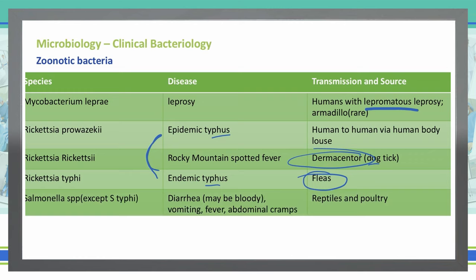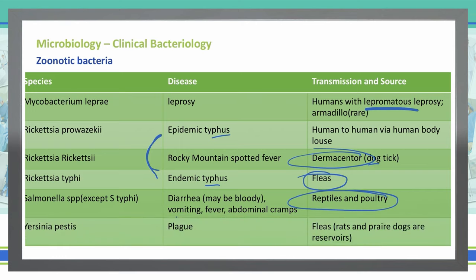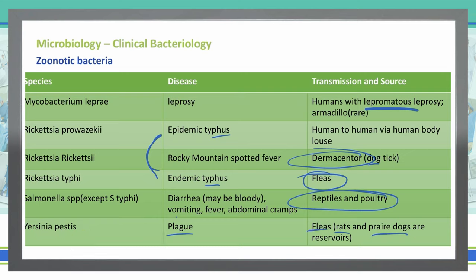Salmonella species — with the exception of the typhi species — causes diarrhea that can be bloody, along with vomiting, fever, and abdominal cramps. It comes through contact with reptiles and poultry. Finally, Yersinia pestis caused the Black Plague and is transmitted from infected rats and prairie dogs, which are reservoirs bitten by fleas. Those fleas then bite humans, transmitting the bacteria.